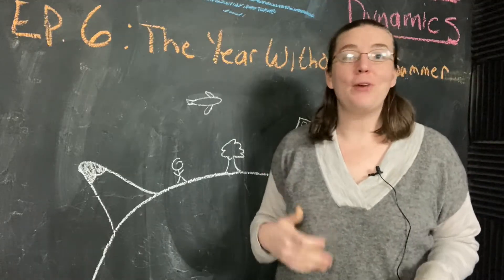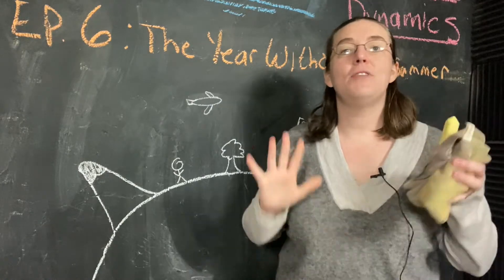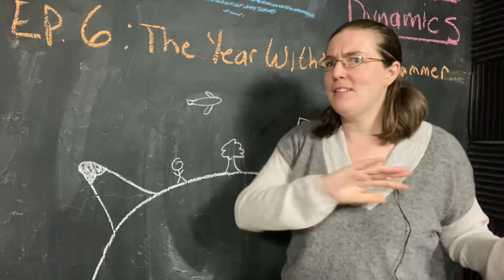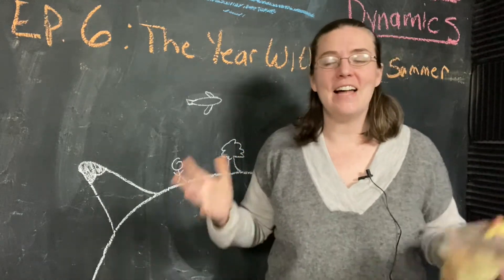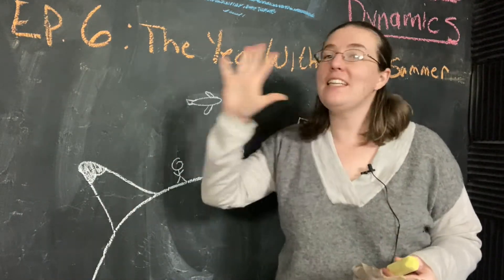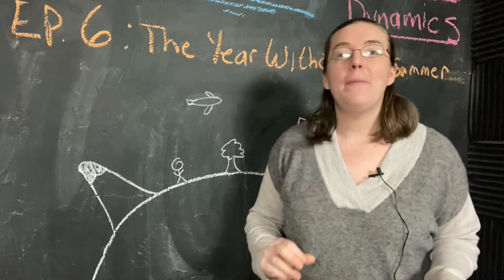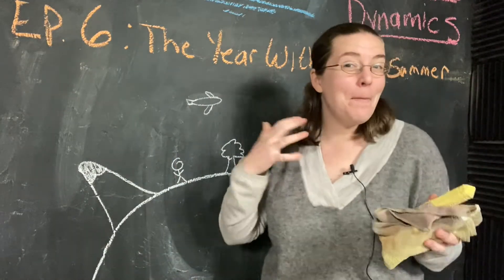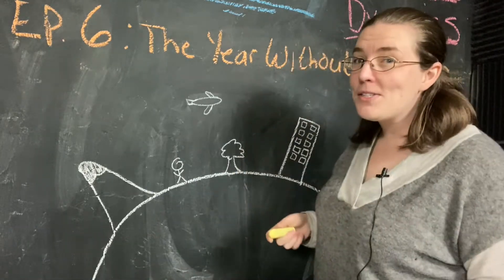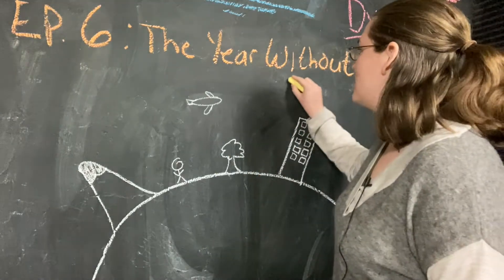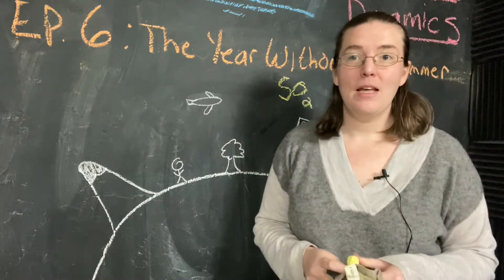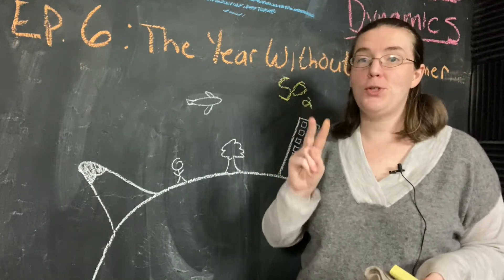When Mount Tambora erupted, it pumped a ton of sulfur dioxide into the atmosphere. Now it definitely pumped a lot of things, not just sulfur dioxide, and how a volcano affects the local weather is practically a scientific field in and of itself. But to simplify things and get the big picture, we're just going to talk about the sulfur dioxide. That's one sulfur atom to every two oxygen atoms, chemical symbol SO2.